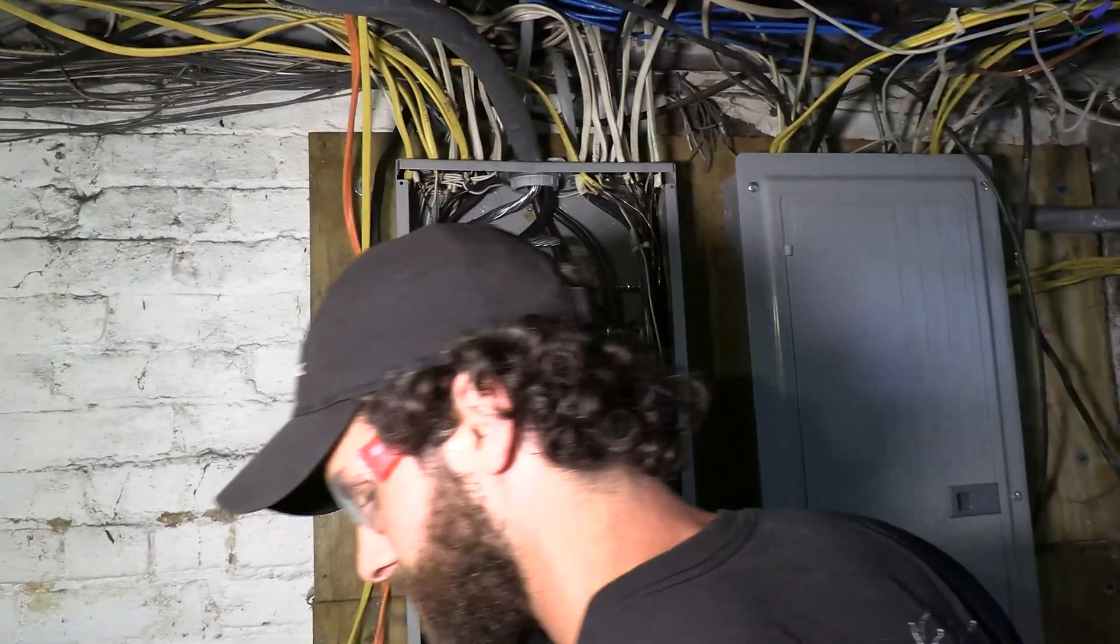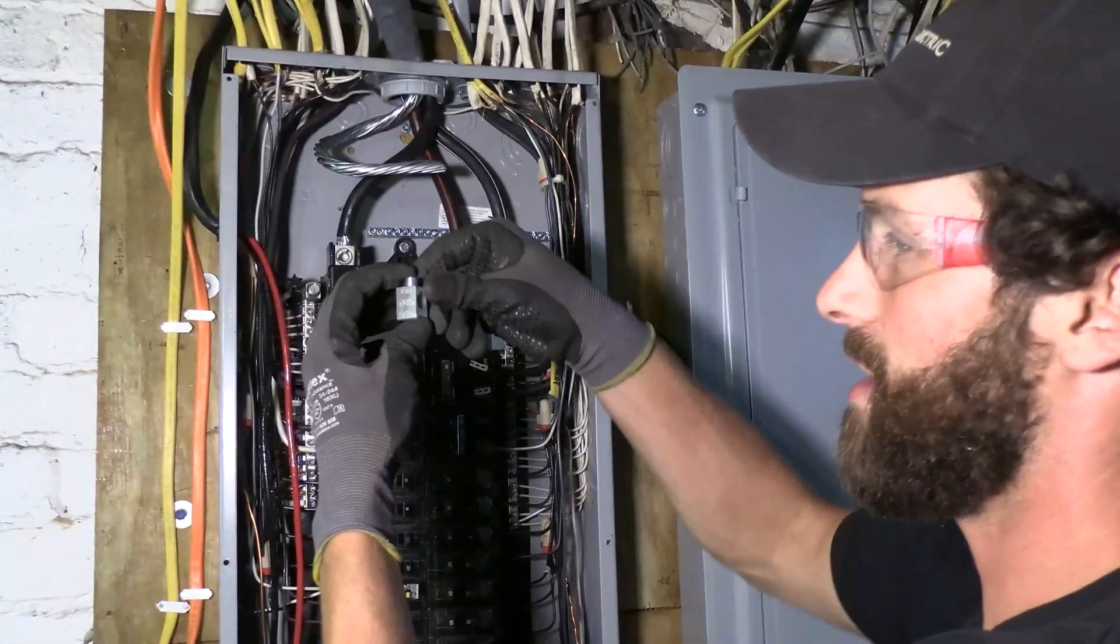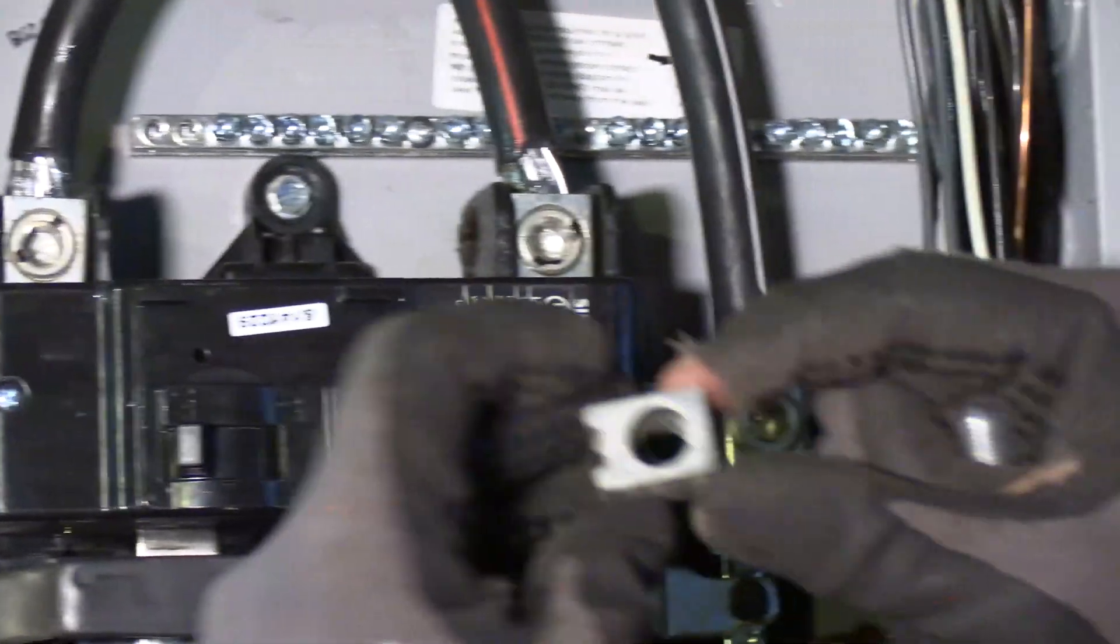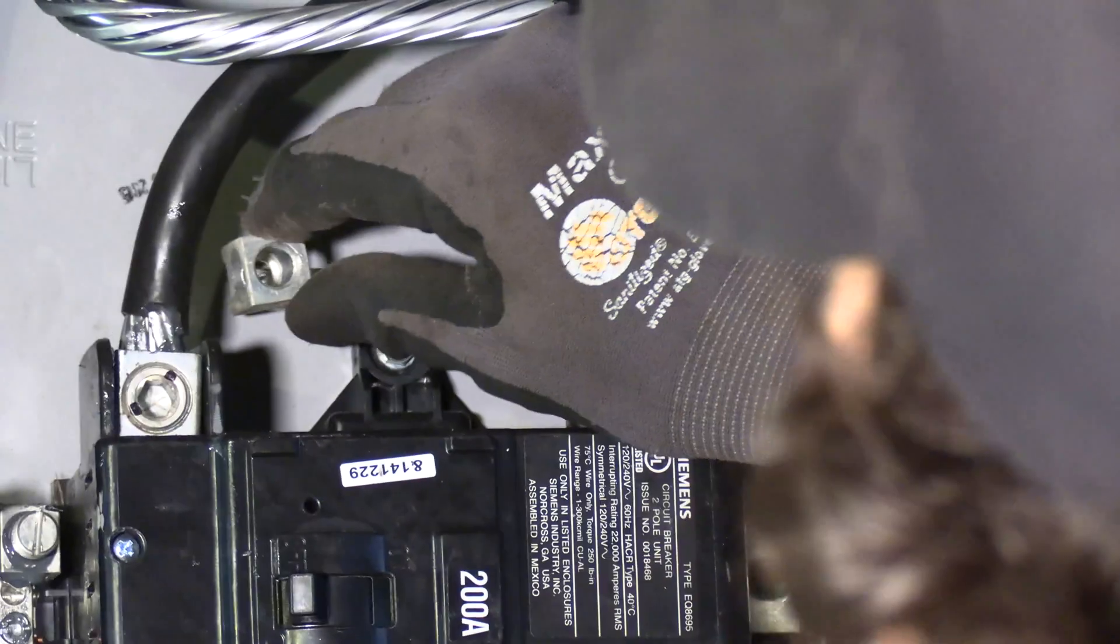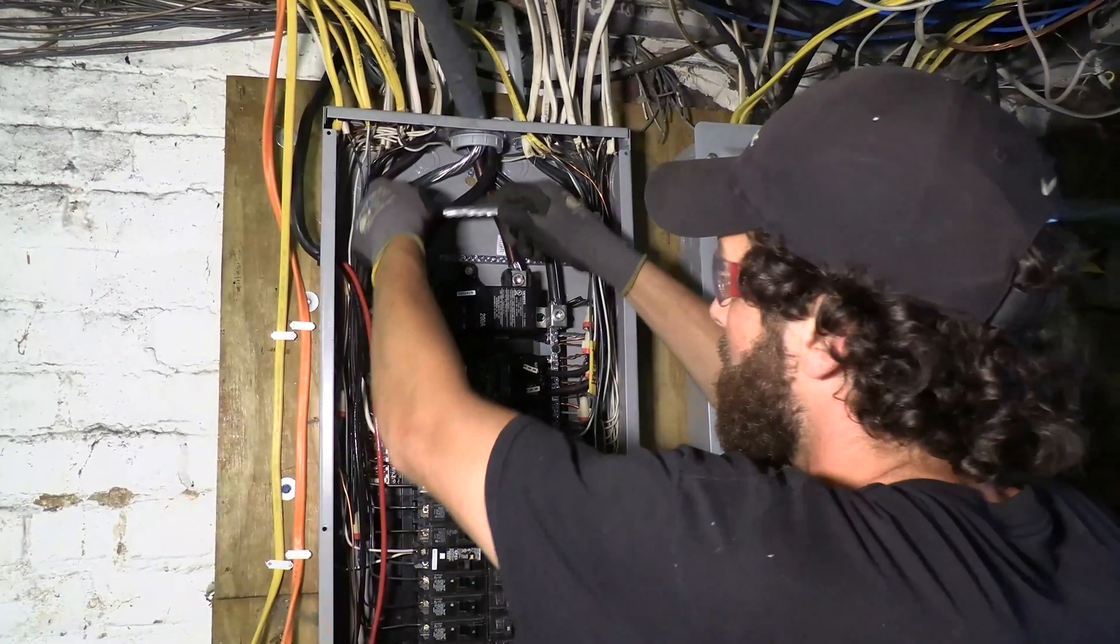Now I've made a separate purchase and I've bought a 2-aught compatible lug. And I'm going to add that lug to this ground bar. It's the same manufacturer. It's made to go right in there and that's going to allow me to terminate this big aluminum conductor.